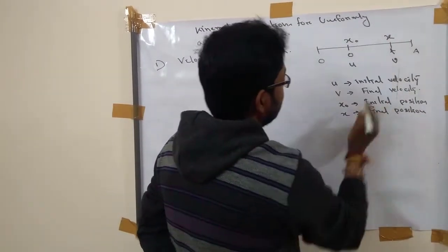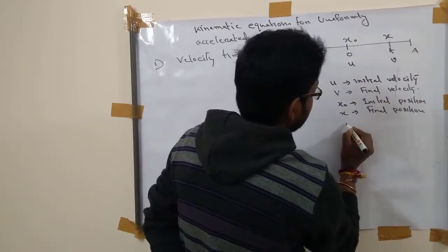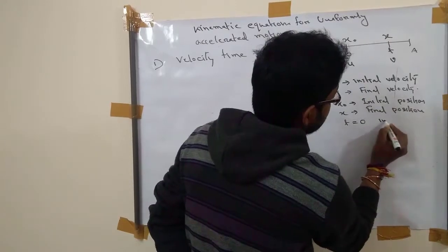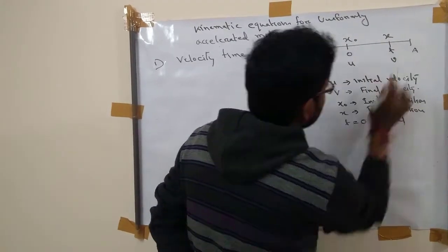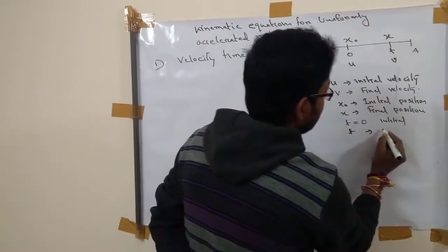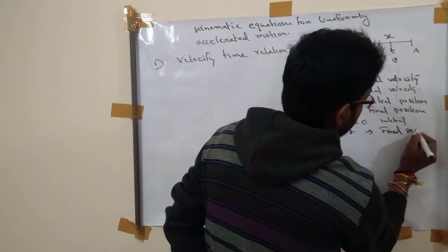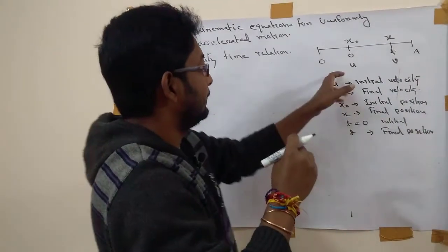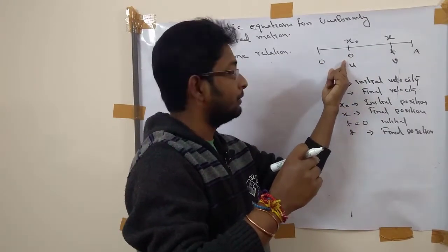The time at the initial position is t equal to 0, and the time at the final position is t equal to T. So at time t equal to 0 we are at the initial position.